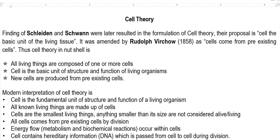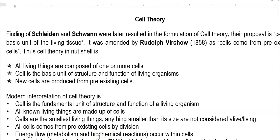Virchow's phrase states that cells come only from pre-existing cells. In a nutshell, the cell theory has the following three important points: all living things are composed of one or more cells; the cell is the basic unit of structure and function of living organisms; and new cells are always produced from pre-existing cells.